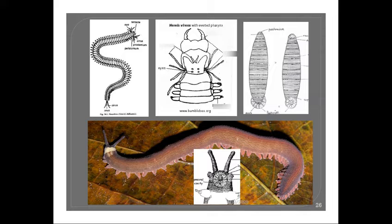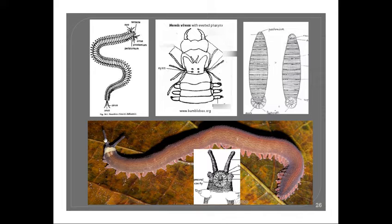The second feature is the indistinct head. You can see here the head region of the earthworm — there is no specialized head region. Instead, it is connected with the trunk region itself; there is no neck region separating the head from the trunk. Similarly, you cannot find any distinct structures separating the head region and the trunk region of the Peripatus.